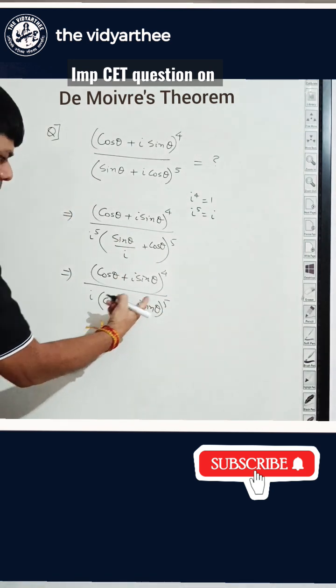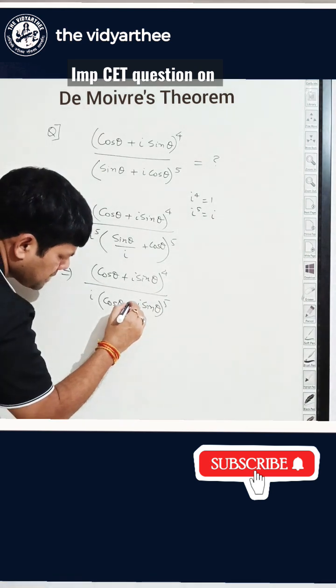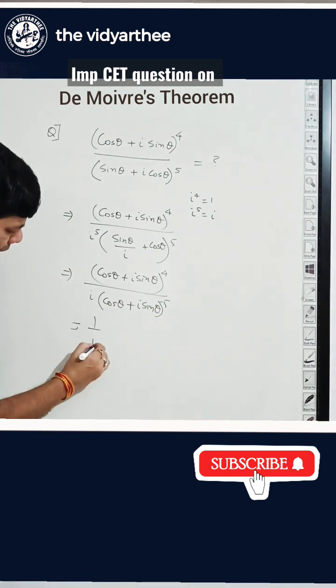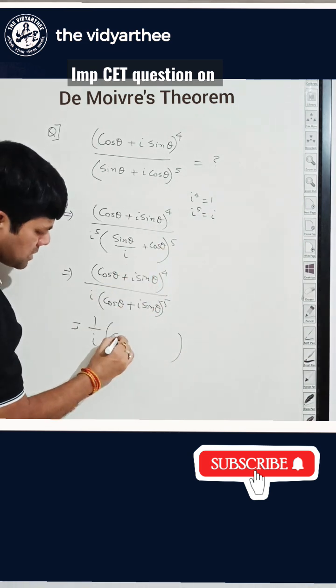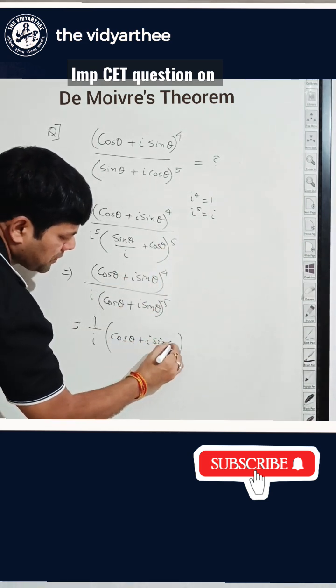Now I got it in De Moivre's form. If you want to take this minus outside, you can take this minus outside by making this plus i and making the power minus. Now you can actually put 1 by i aside. You can take the whole thing upwards. It will become cos theta plus i sine theta power 9.